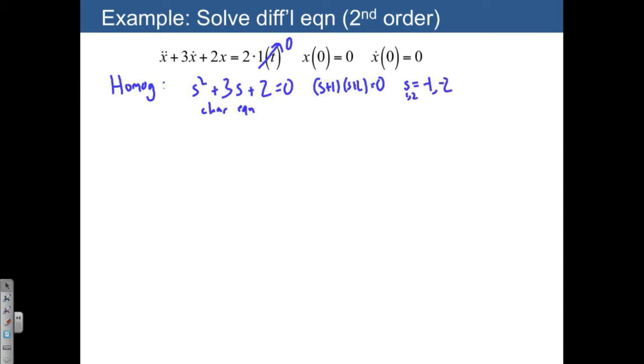Maybe I'll use the subscript 1 and 2 for our two solutions, minus 1 and minus 2. That means our homogeneous solution is going to be equal to a1, a constant, times e to the s1t plus a2 e to the s2t.